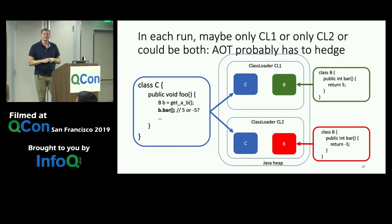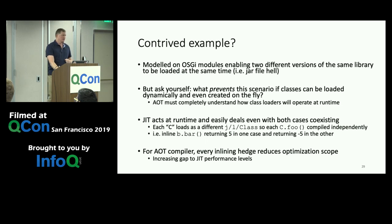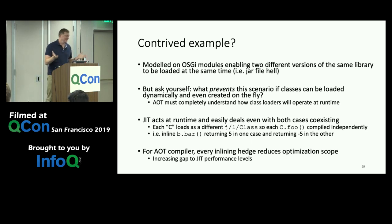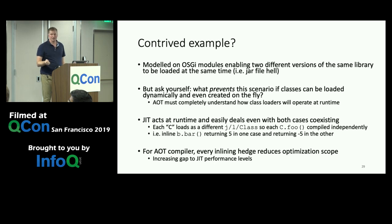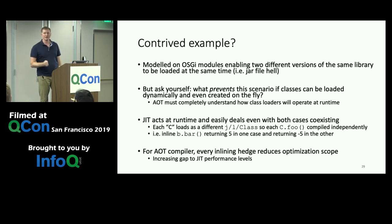AOT probably has to hedge in this case — maybe only class loader one exists, maybe only class loader two, or maybe both. This is actually modeled on how OSGI modules work, enabling two different versions of the same library to be loaded simultaneously — what we call "jar file hell." Nothing in the Java specification prevents this scenario. These hedges that AOT compilers have to make increase the potential gap between AOT and JIT steady-state performance levels, since inlining is a great enabler for performance.